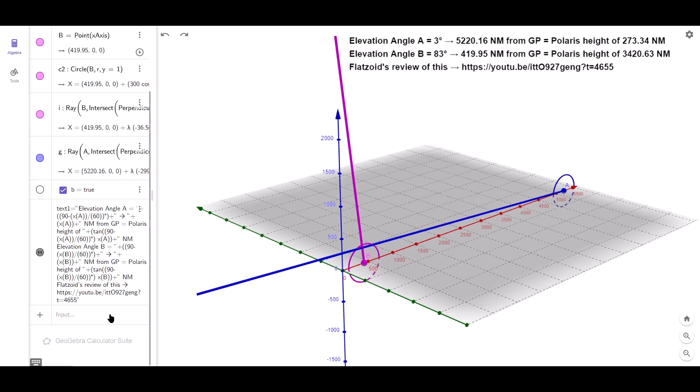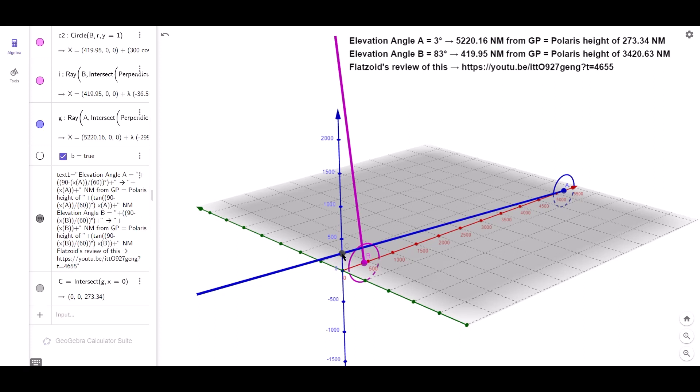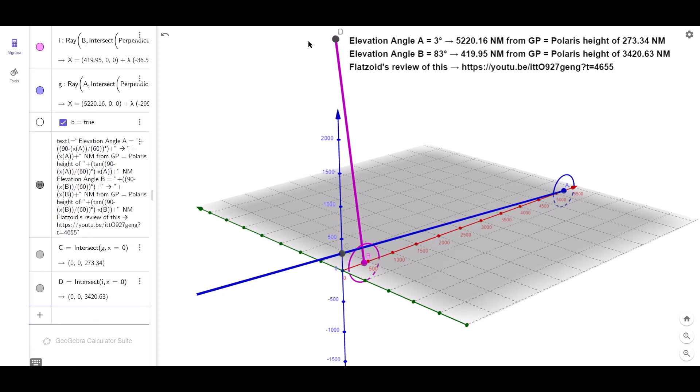So as a little experiment, I shall be able to find out where the intersection lies on that z-axis. So the ray for Mike is G, and that will be on the x equals zero plane. So there's Mike's intersection point, and that's 273.34. And let's do the same for Michelle. Intersect. Here ray is I, and that will also be on the same plane. And that intersection point is up here, and that is 3420.63.